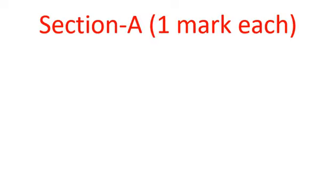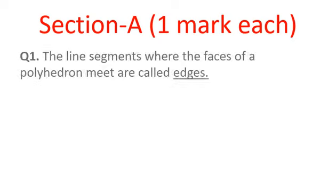The test was divided into four sections. Let us discuss section A, one-mark questions. The very first question was: the line segments where the faces of a polyhedron meet are called what? We have learned about faces, vertices and edges. The answer of the first question is edges.